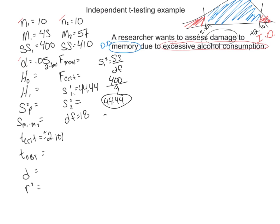Variance for our second group is we're going to use 410 divided by 9. So it's just slightly bigger. 45.5.